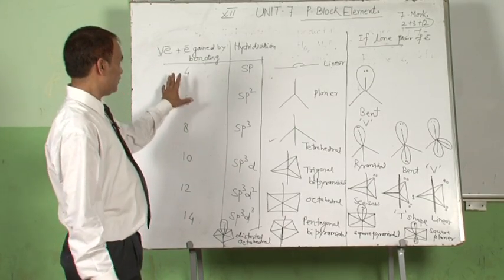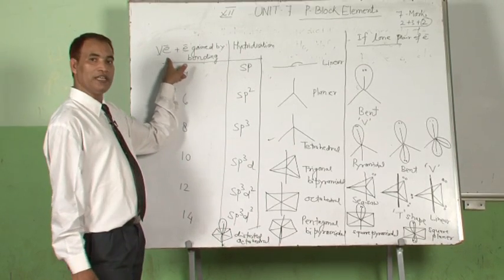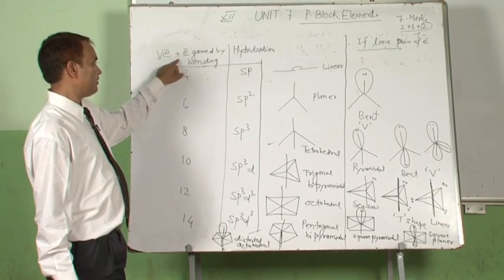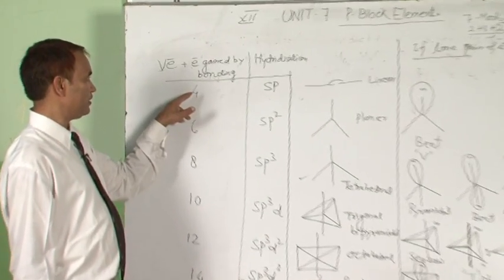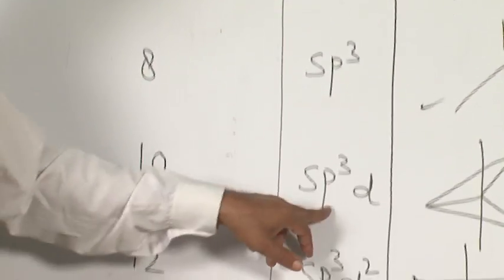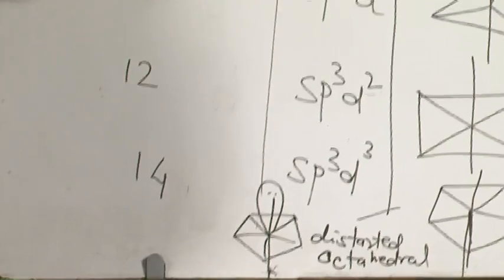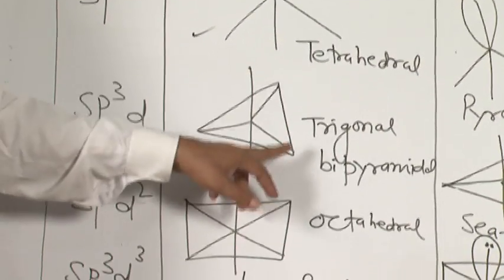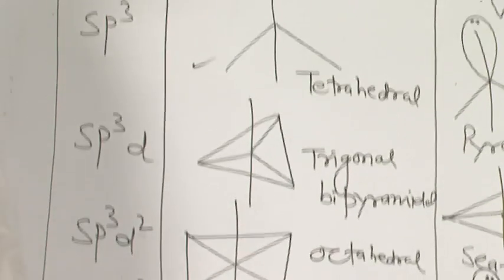These things we have already studied in Class 11; we just have to recall. Once again to summarize: for total electrons of 4, 6, 8, 10, 12, and 14 — hybridizations are SP, SP2, SP3, SP3D, SP3D2, and SP3D3 — with regular geometries linear, planar triangular, tetrahedral, trigonal bipyramidal, octahedral, and pentagonal bipyramidal. This is the regular geometry when there is no lone pair of electron.